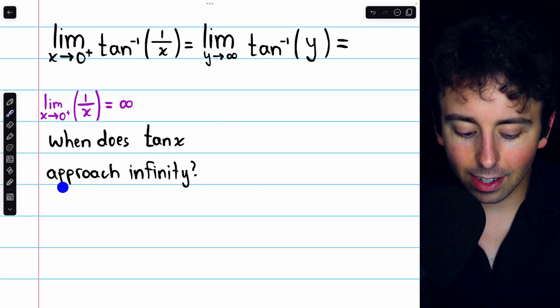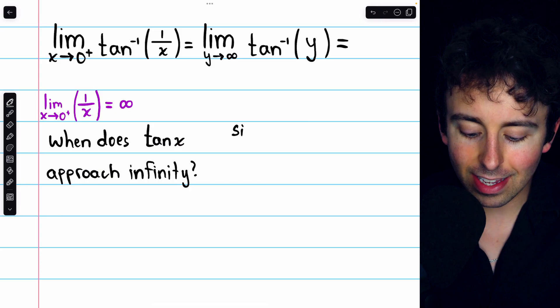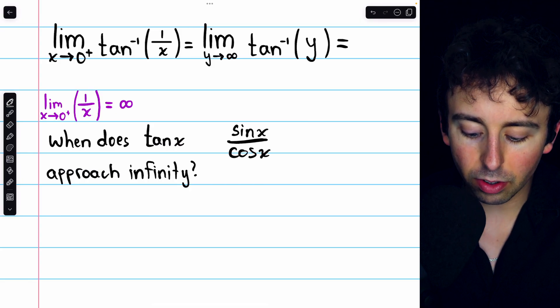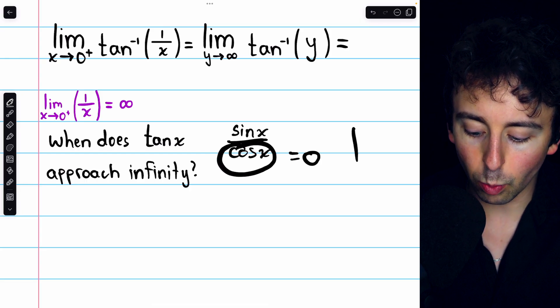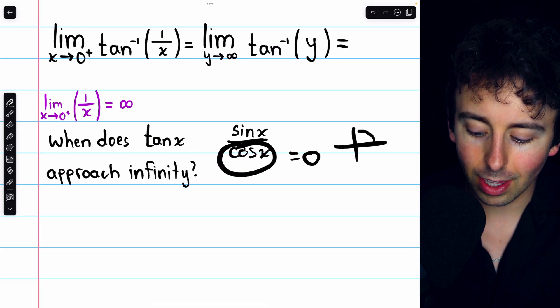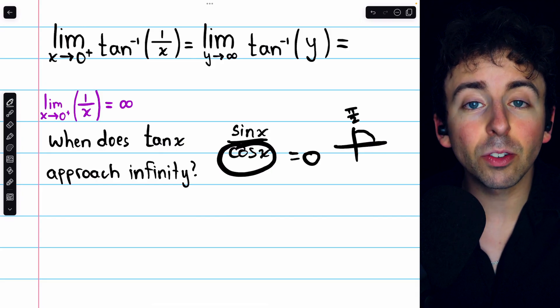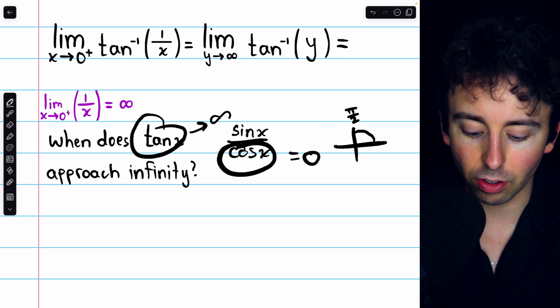So when does tan x approach infinity? Well, you may recall that tangent is the same as sine over cosine. So it goes to infinity when cosine is equal to 0, which if you remember the unit circle, that's at π over 2. That's when cosine is 0, hence tangent is going to infinity.